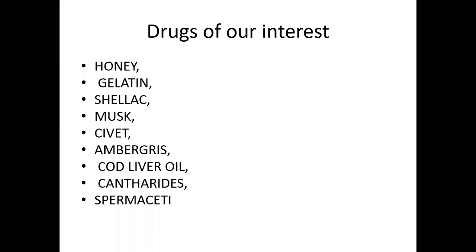In our last lecture we discussed drugs of different origins. Pharmacognosy mainly deals with drugs isolated from natural sources. Among the drugs of particular interest are honey, gelatin, shellac, musk, seaweed, ambergris, cod liver oil, cantharides, and spermaceti. These are the drugs we are going to cover in our lectures.